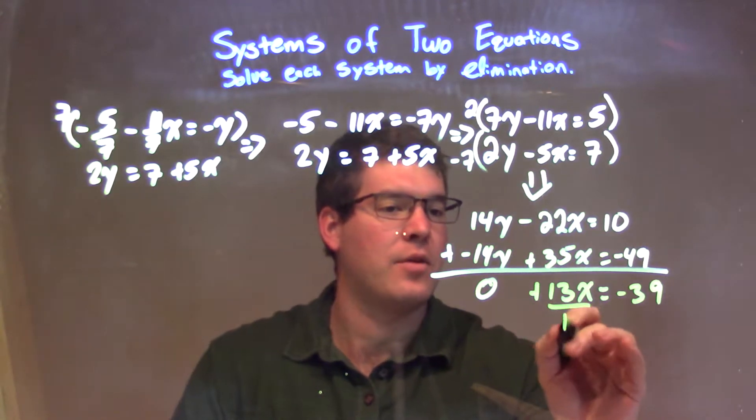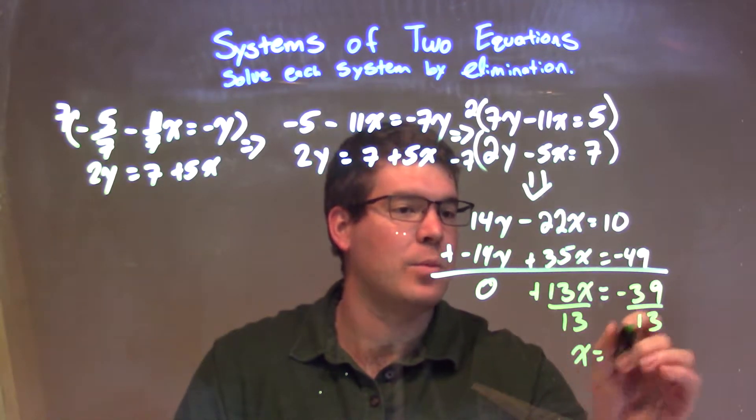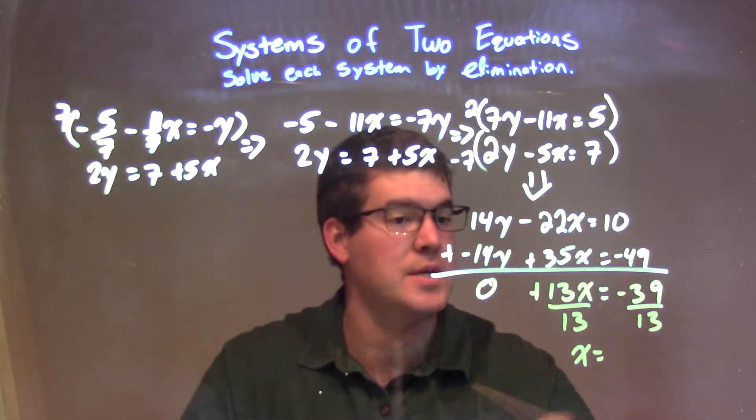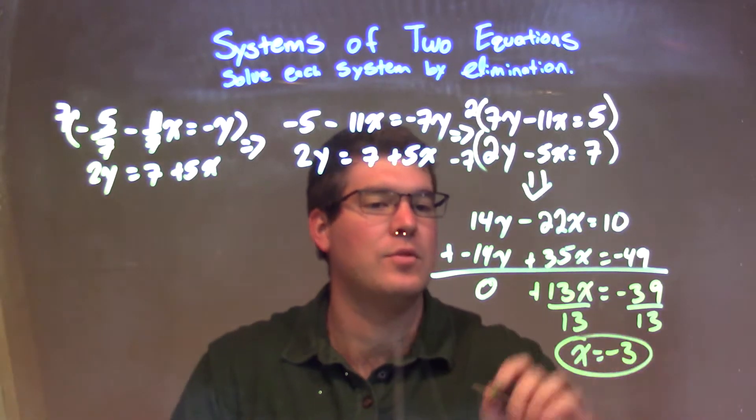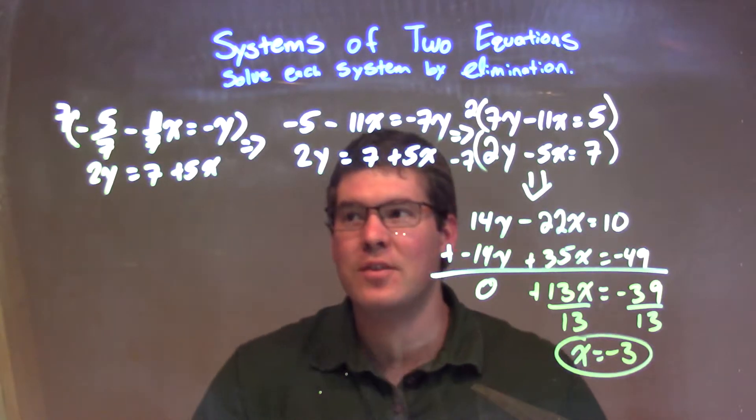We divide both sides by 13 to get x by itself, and x equals negative 39 divided by 13, which is negative 3. So x equals negative 3.